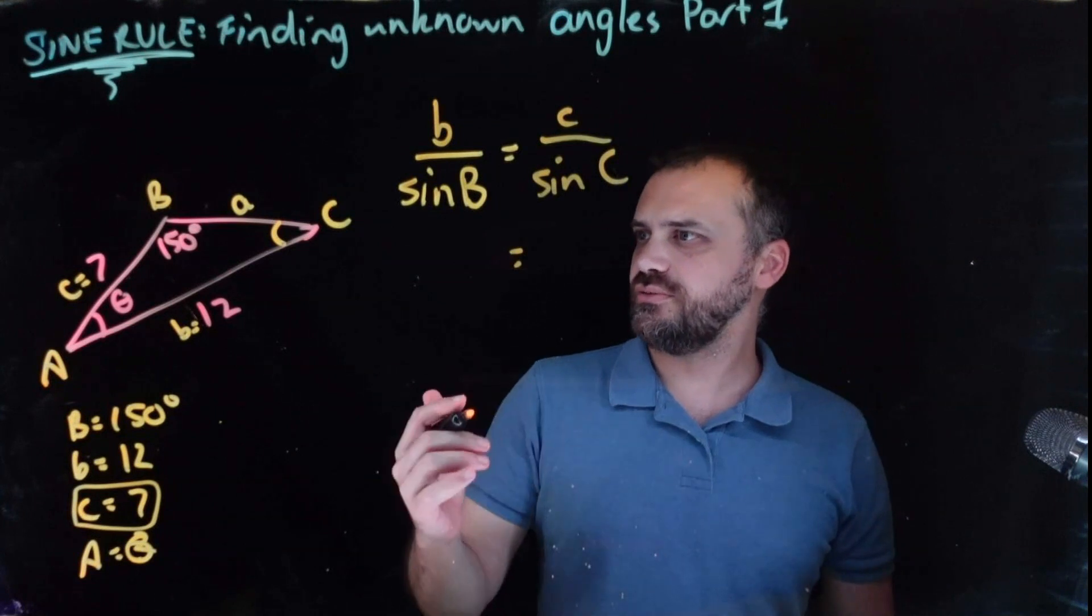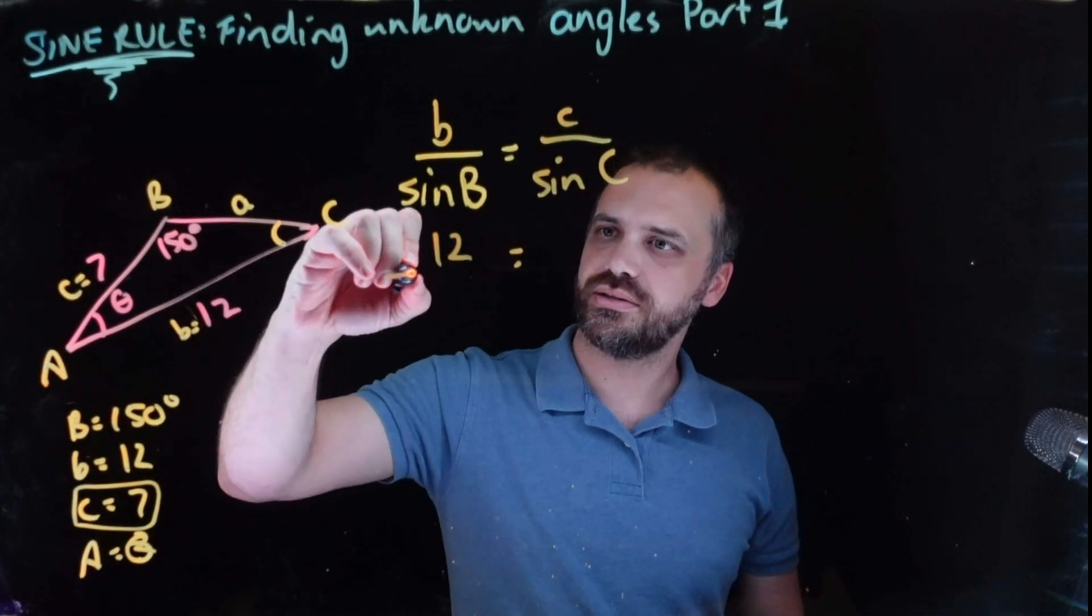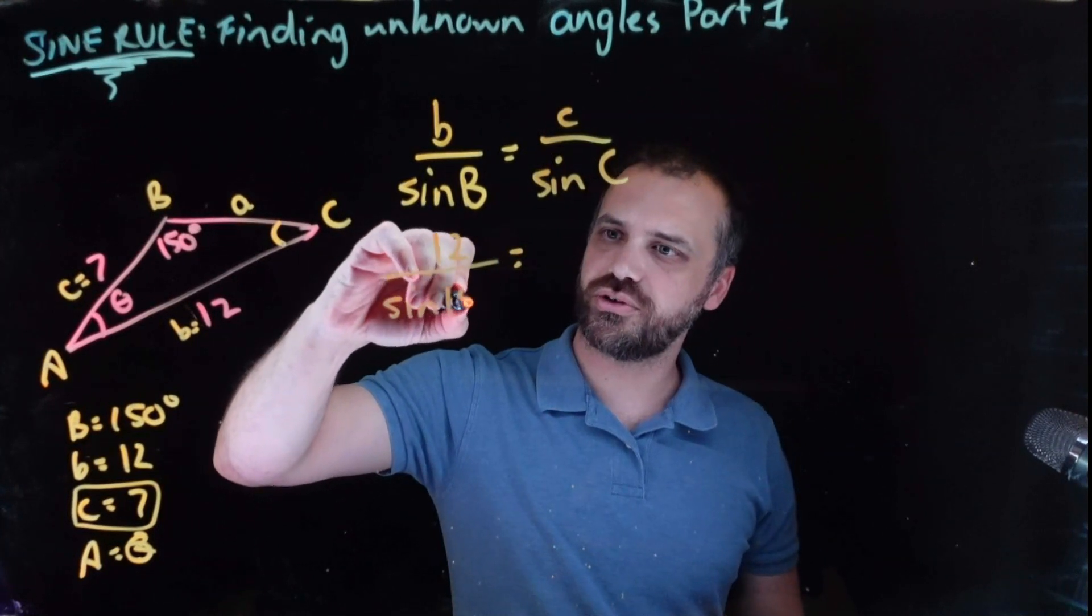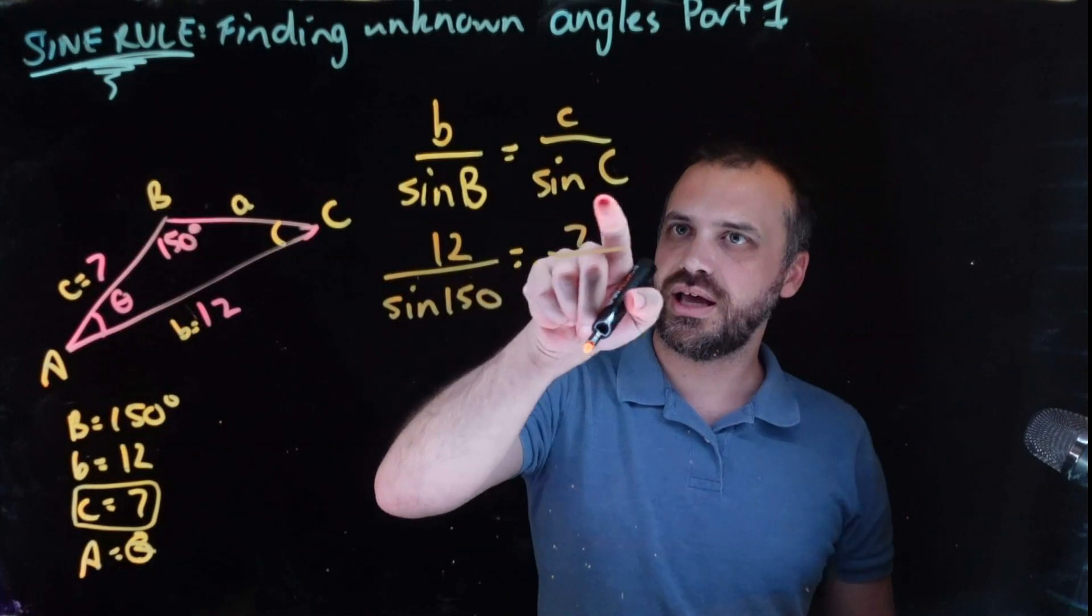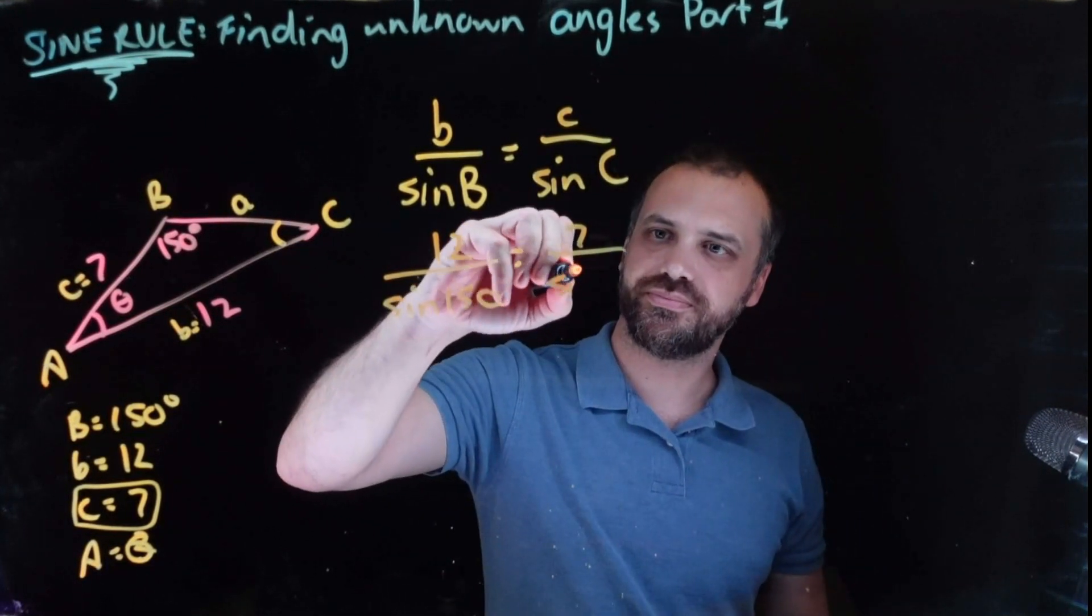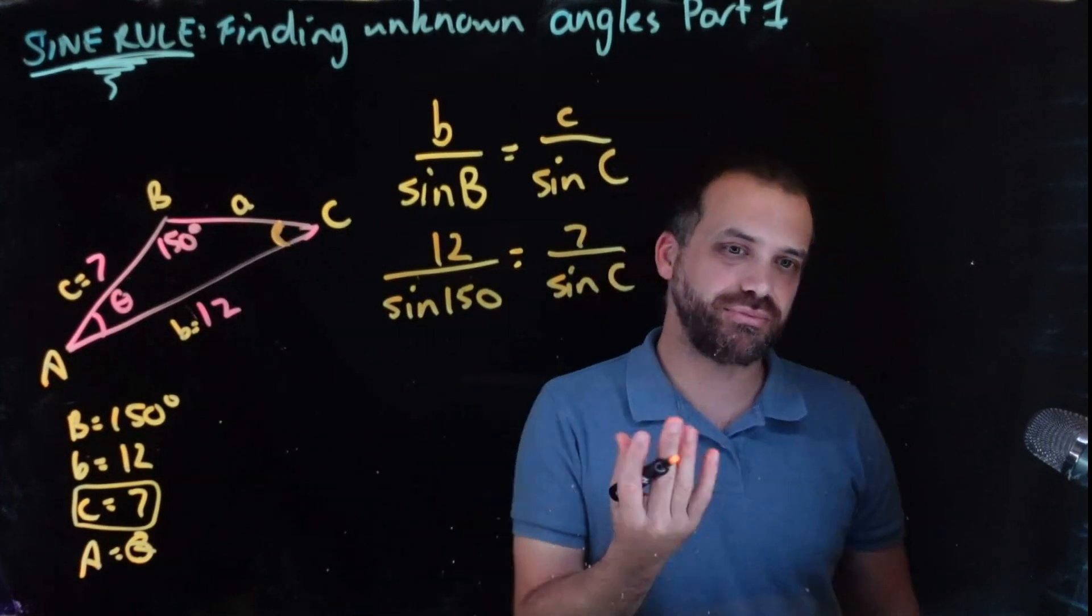Okay, so let's put in some stuff. B equals 12, sine B, 150, length of C, 7, and sine C, I don't know. I don't know what that angle is, right? That's the thing I'm trying to find.